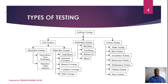The next level is System Testing. System Testing tests the overall system and its functionality. A target environment is created and the system is tested in that environment. System Testing includes Alpha Testing, Beta Testing, and Acceptance Testing.